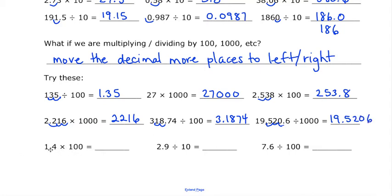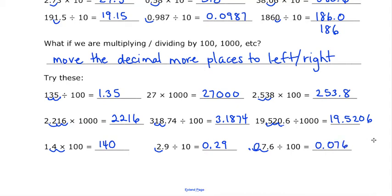For 1.4 times 100, I move the decimal 1, 2 spots — if there is no number there, I put an imaginary zero. Think of it like an egg carton: any time you have a blank space, drop an egg in that spot. Then 2.9 divided by 10 — I find the decimal place, move it to the left one spot, so 0.29. And 7.6 divided by 100 — I find that decimal place and move it 1, 2 spots to the left, adding that zero, so it becomes 0.076. Those are the quick and easy ways to multiply or divide by powers of tens.